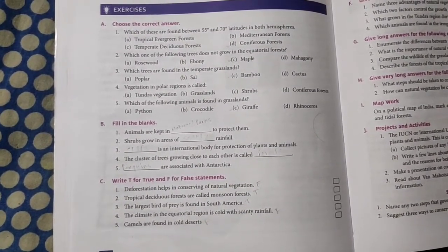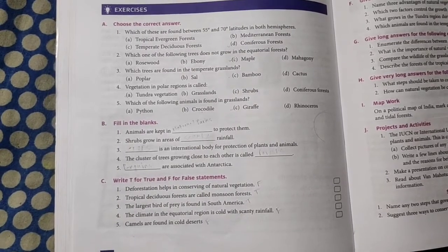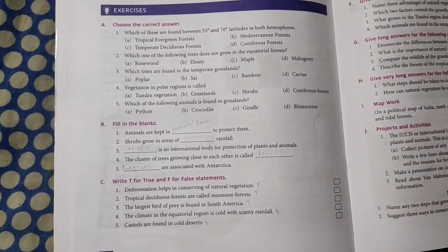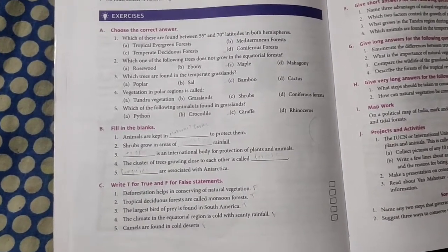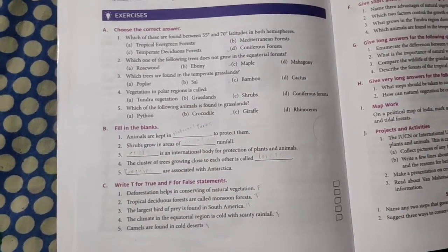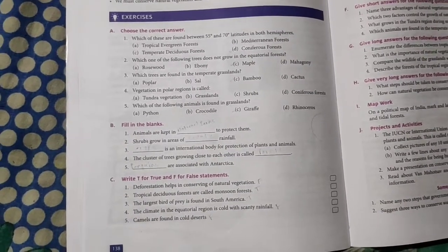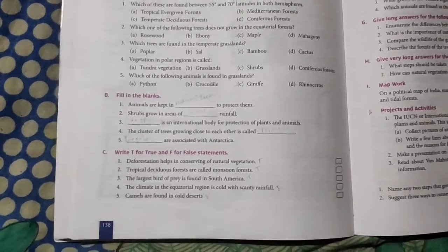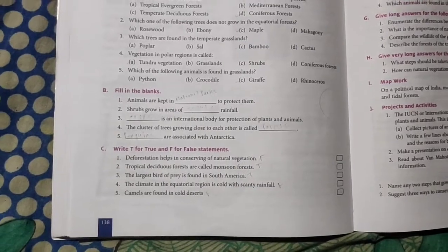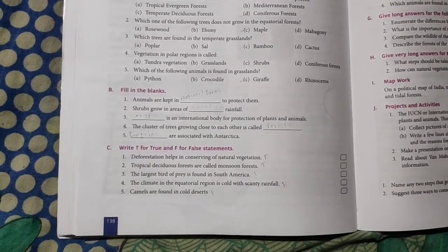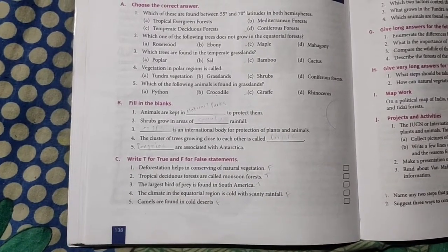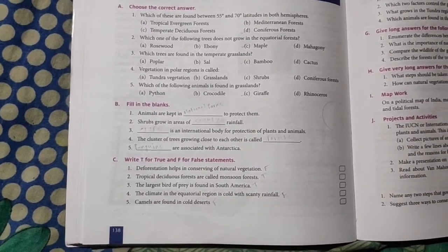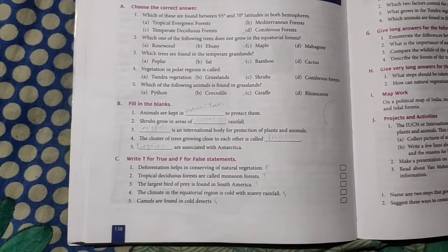Second: tropical deciduous forests are called monsoon forests. True, right now monsoon period is going on in India. Third: the largest bird of prey is found in South America. That will be true. Fourth: the climate in equatorial region is cold with scanty rainfall. No, that will be very hot with plenty of rainfall, so that will be false.